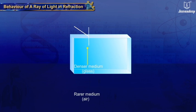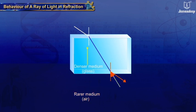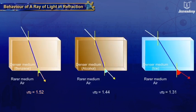When a ray of light passes obliquely from an optically denser medium to an optically rarer medium, it bends away from the normal at the point of incidence. Here, r is greater than i, and the refractive index of the second medium, ₁η₂, is less than one. The lesser the value of the refractive index, the greater is the bending of the ray away from the normal.